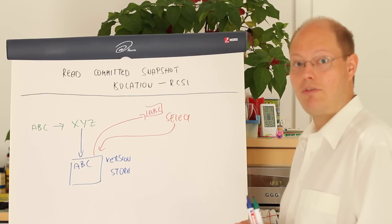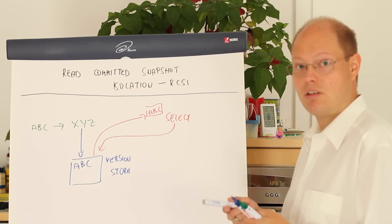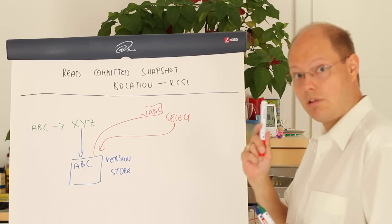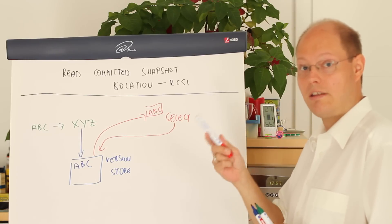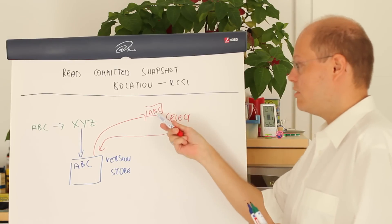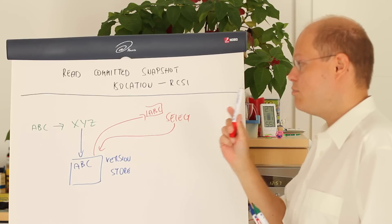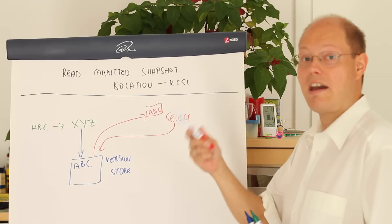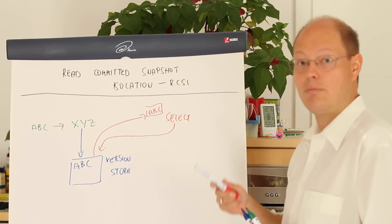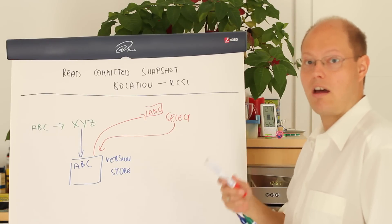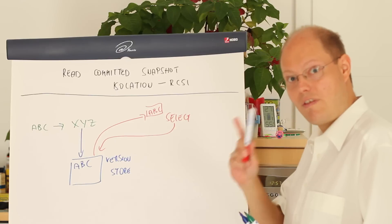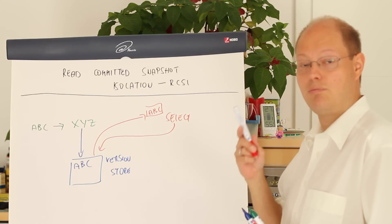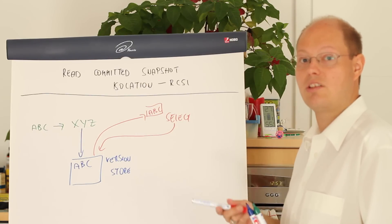The most important thing about read-committed snapshot isolation is that you have no dirty reads. SQL Server returns the value which was valid at the beginning of your statement — the values A, B and C. If you got back the values X, Y, Z — the uncommitted values — then you would have a dirty read. So that's very important: read-committed snapshot isolation does not give you dirty reads.